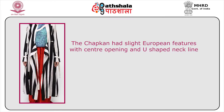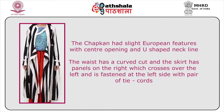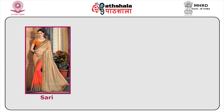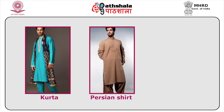This style continued to be popular in Rajasthan courts even in the 19th century. The chapkan had slight European features with a center opening and U-shaped neckline; the waist has a curved cut and the skirt has panels on the right which cross over to the left, fastened with a pair of cords. Apart from saree, ghagra, and choli, another important costume depicted in paintings and art forms is the kurta or Persian shirt, with an opening at the neck, slits at the sides, and a four-pointed hemline.